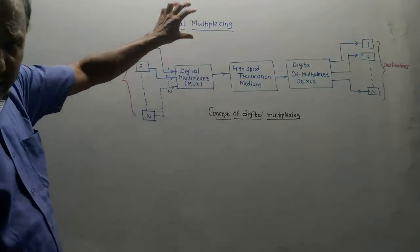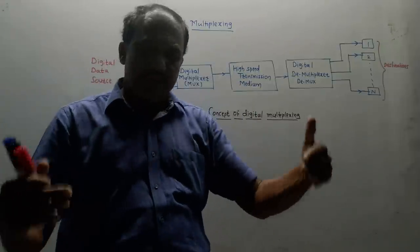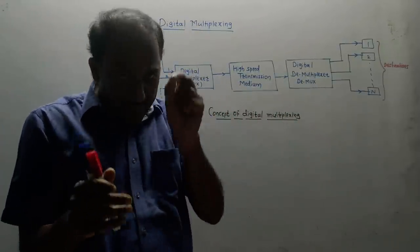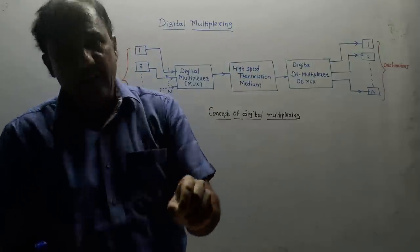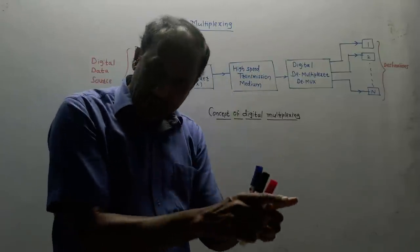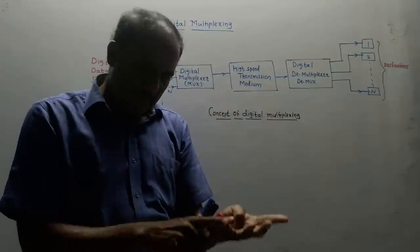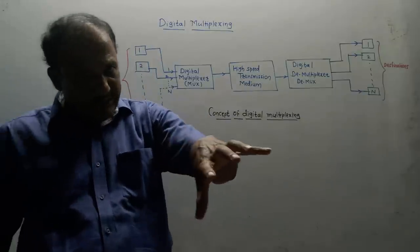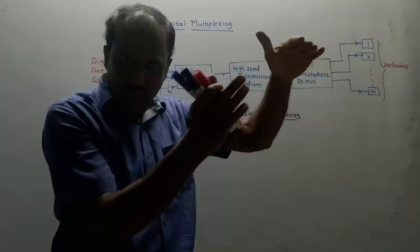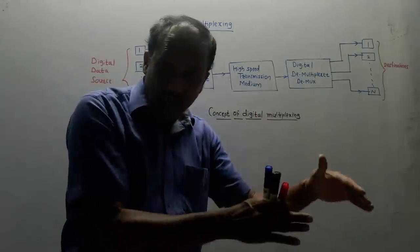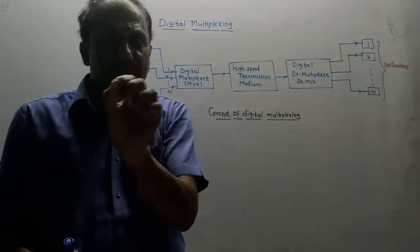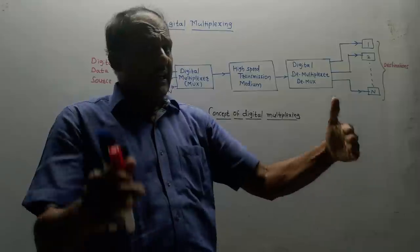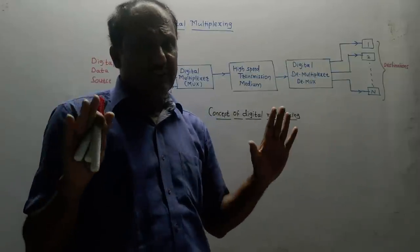Multiplexing has been explained briefly. If it is an analog signal, it is easy to identify or separate out different analog signals. But if it is a digital signal, we know that digital signals are obtained from analog signals by performing sampling, then quantization and encoding. So in the case of digital signals, it is very difficult to separate out the different signals.